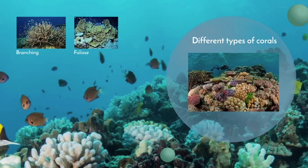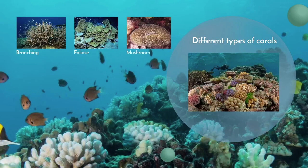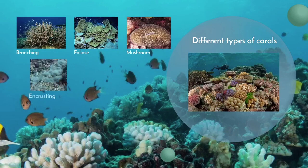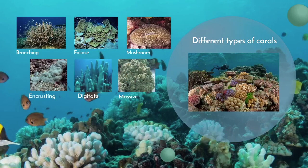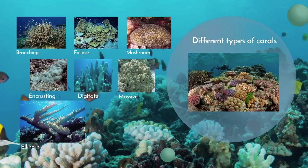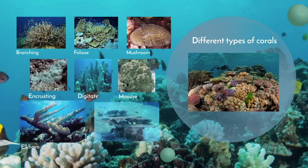Folios have broad, plate-like flaps. Mushroom corals resemble a cup of a mushroom and are solitary, meaning it's just one coral polyp. Encrusting corals create a thin, colorful surface and are some of the most adaptive corals. Digitate resembles fingers in their form of growth. Massive corals are typically boulder-shaped and vary in size, some reaching the size of a two-story house. Elkhorn resembles the branched horns of an elk or deer. And finally, table corals are easily recognizable by the table-form horizontal growth.